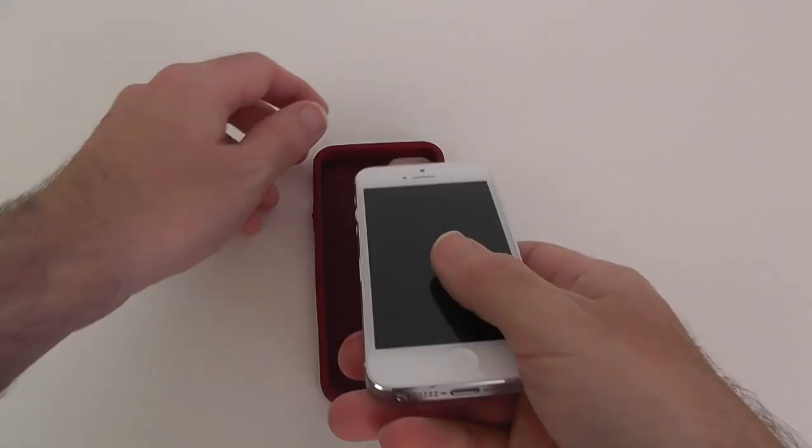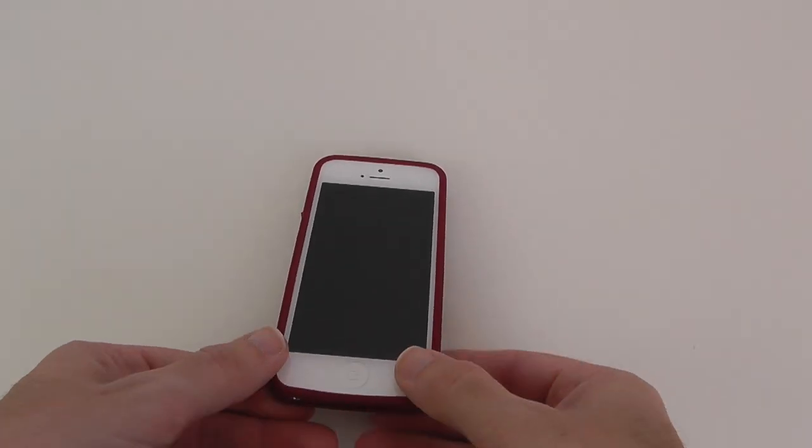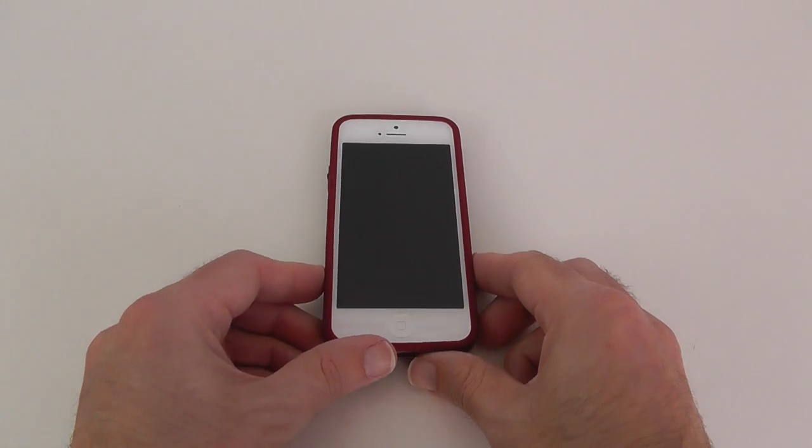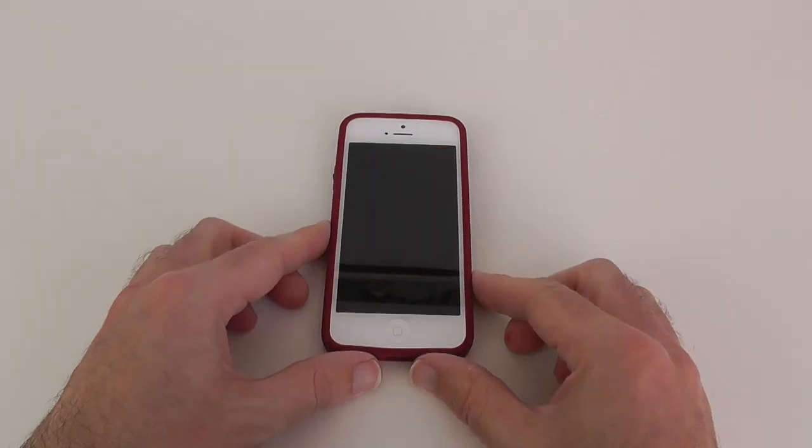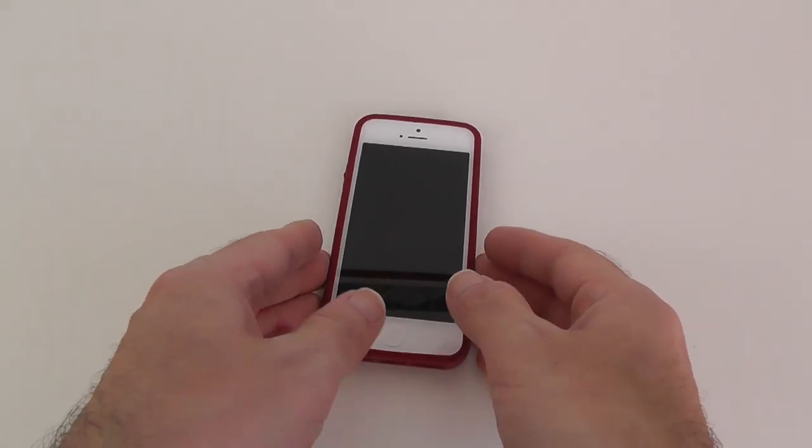Let's get my iPhone 5 and pop it into the case. We'll go top edge first. Just lower it in and then ease the bottom edge over. And this is what I like about these Signet cases. They've really got their sizes spot on, no effort required at all to install that.